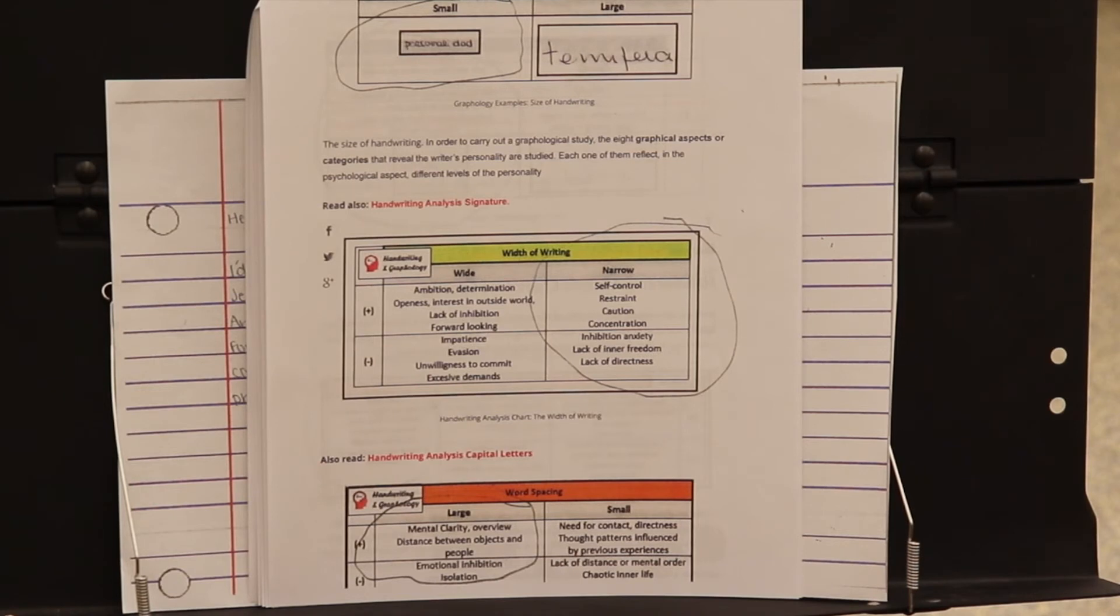Now here's where hers gets different. With the writing, hers was more of a narrow width versus Jennifer's, which was wide. Positives and negatives: positive shows self-control. Negative could be inhibition or anxiety.